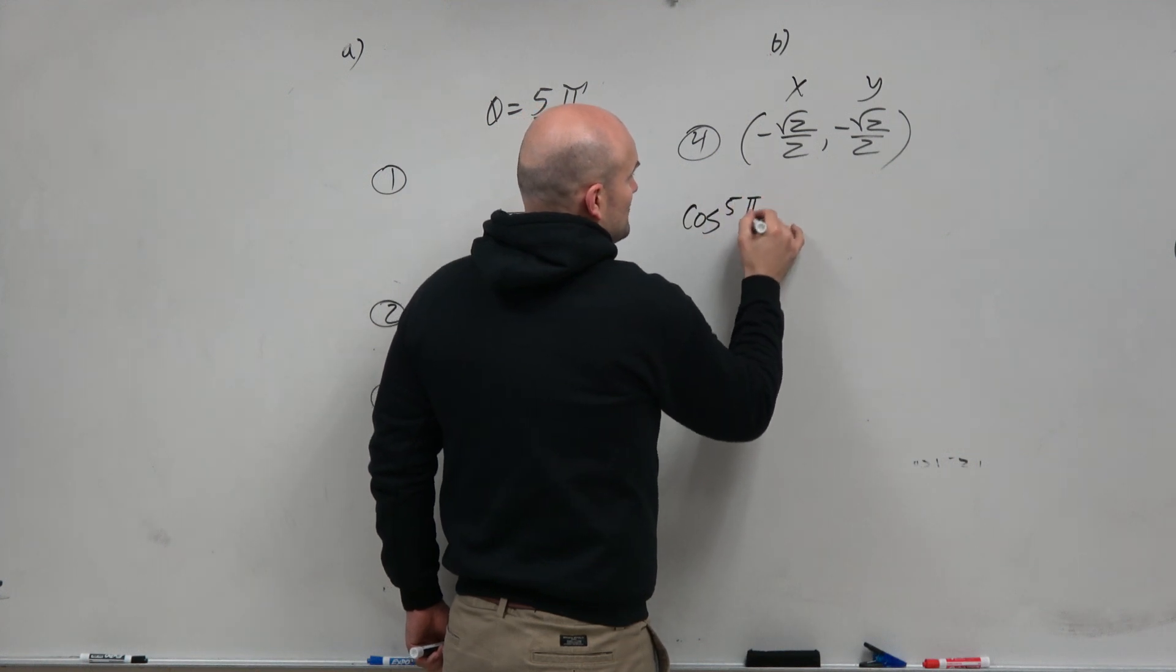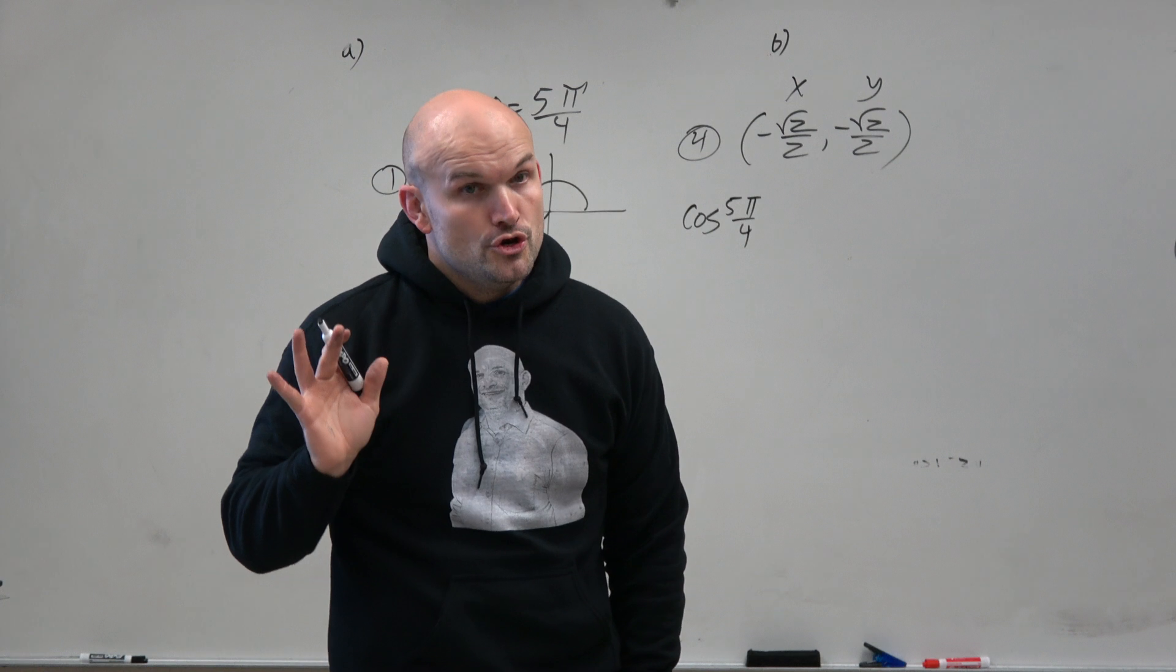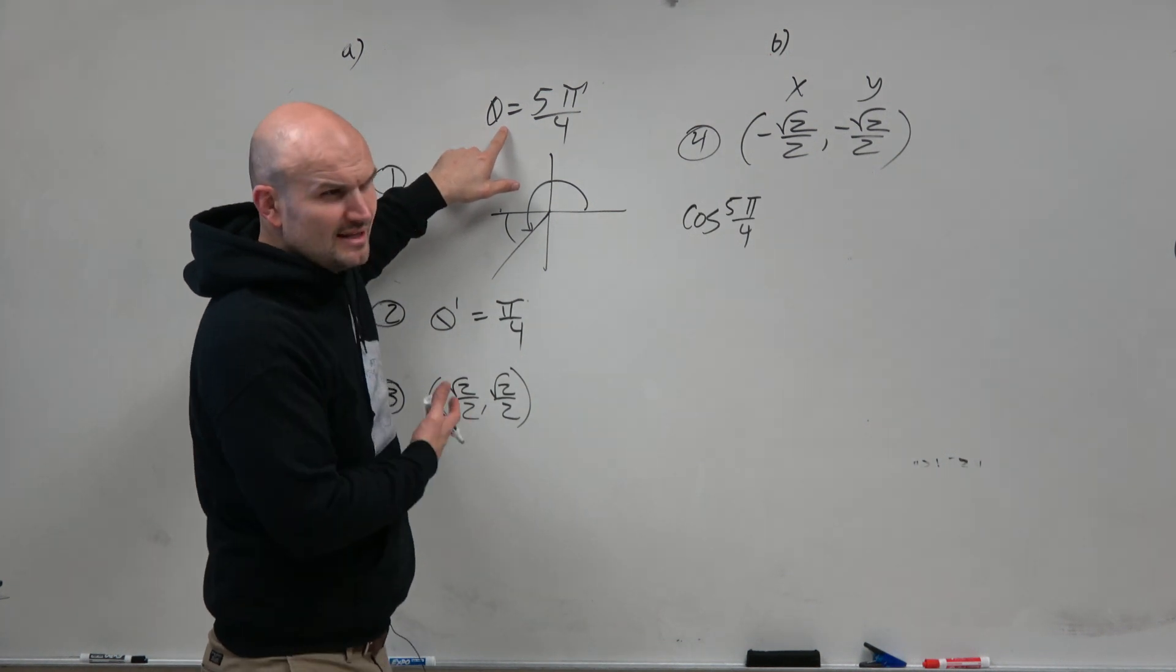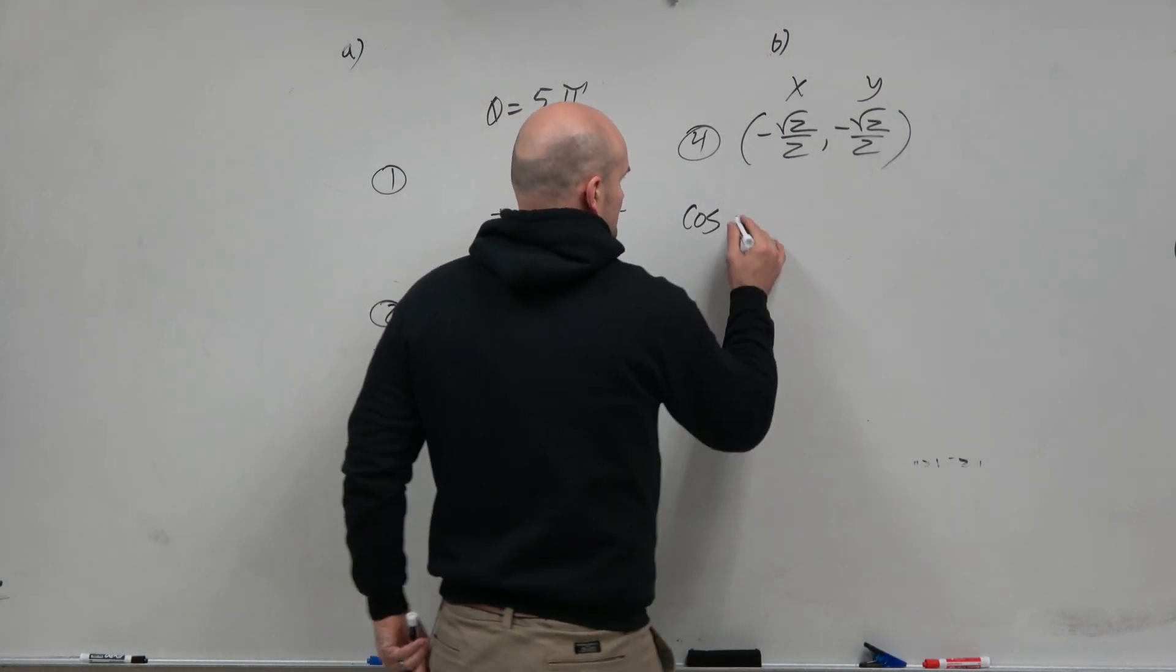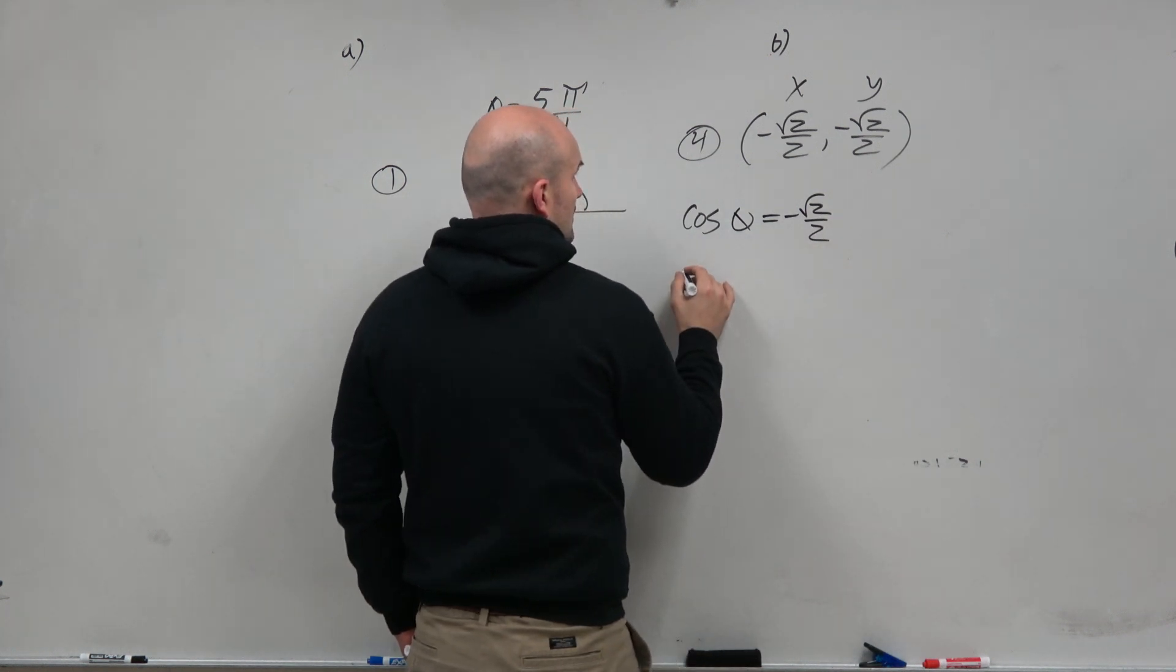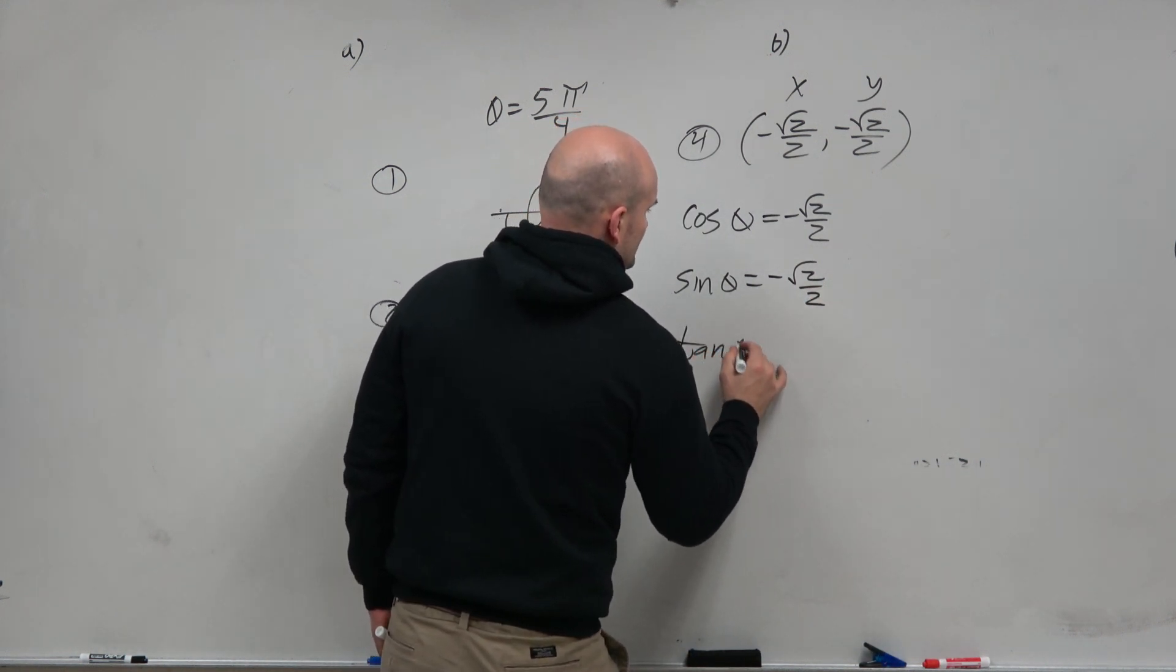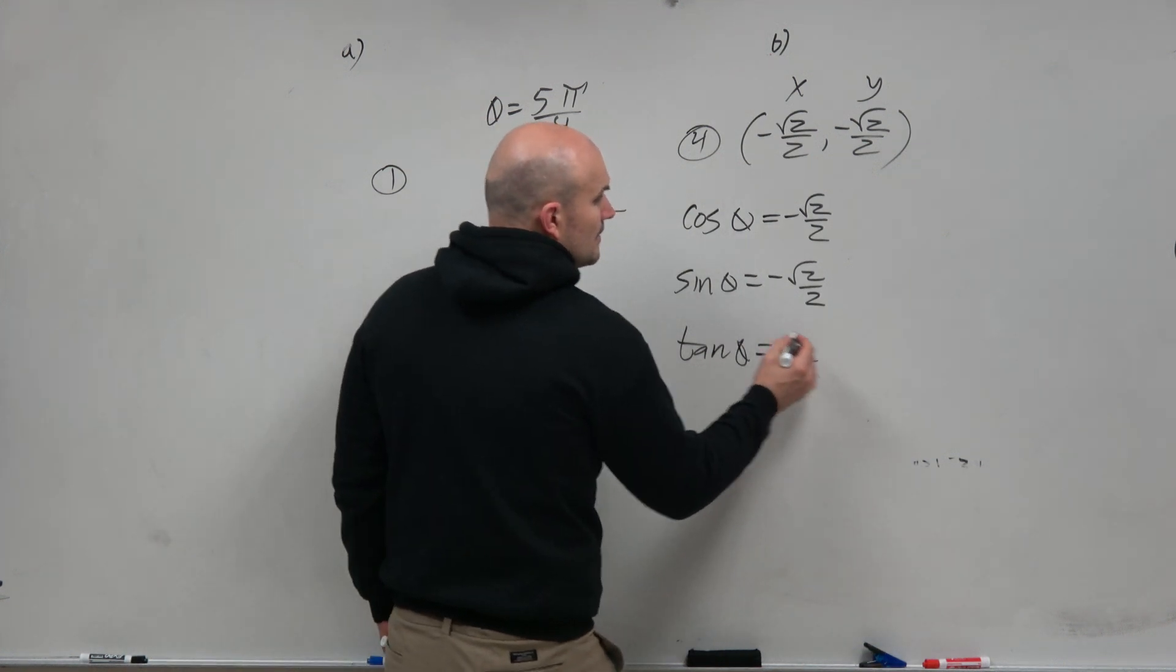So now the cosine of 5π/4, because it's always the cosine of the angle, right? Nobody wants to write 5π/4 six times. We have 5π/4, guys, is equal to θ. Can we just use θ instead? It's much faster, easier. So cosine of θ is the x-coordinate, -√2/2. Sine of θ is the y-coordinate, -√2/2. And tangent of θ is y/x, which is just going to be positive 1.